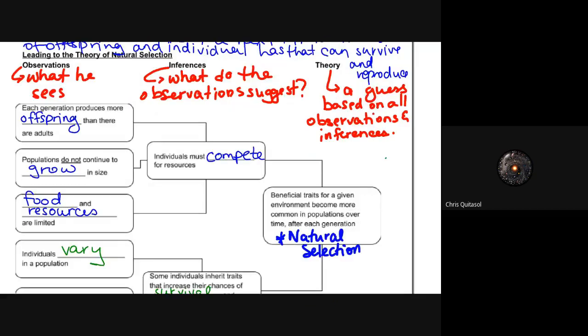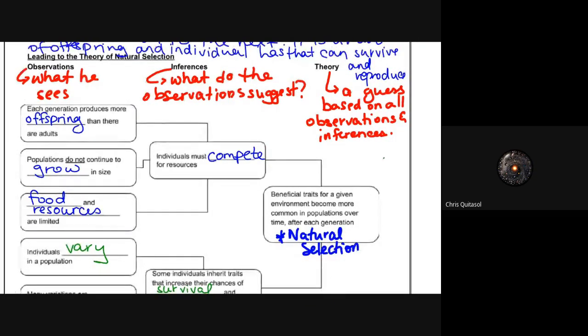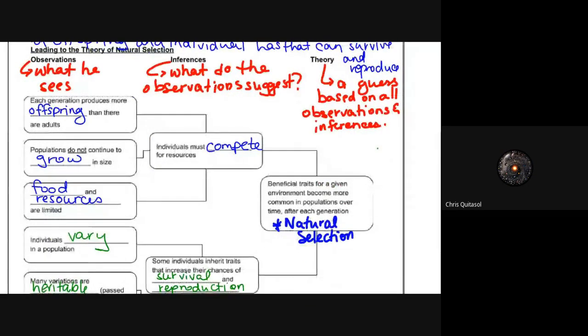The main theory of natural selection is broken down into a couple of different pieces. There's three main separate parts of the scientific method. The idea is what Darwin saw—those observations—which led to him making inferences, which were then able to help solidify or help to found the theory that he created.